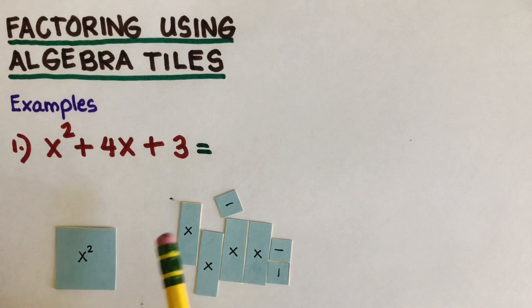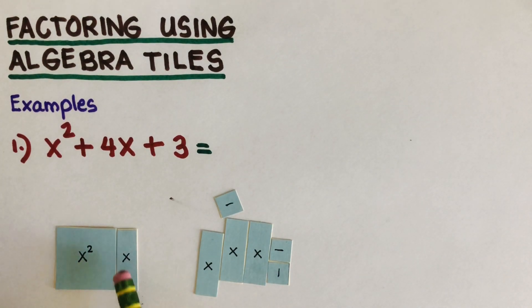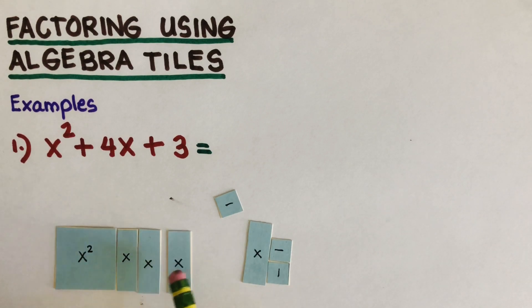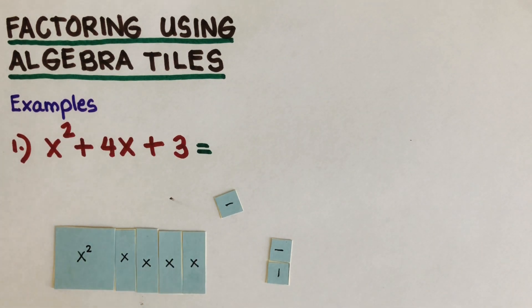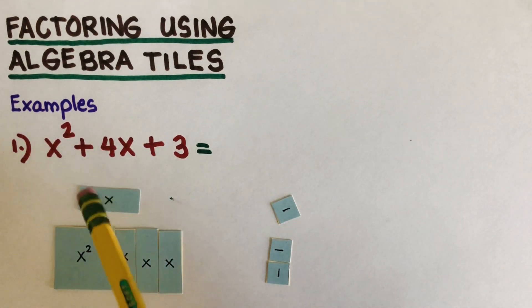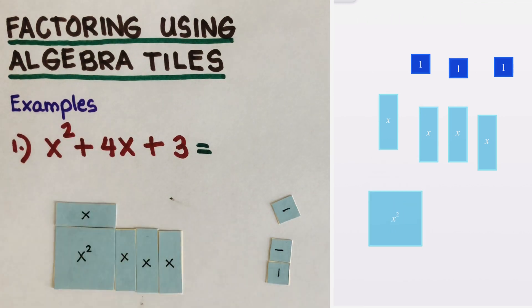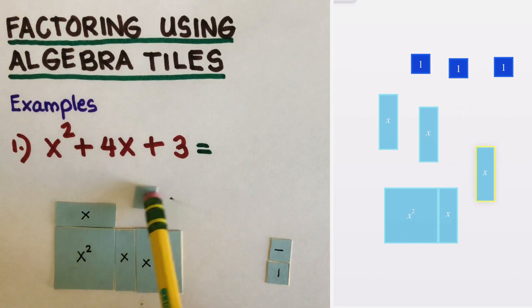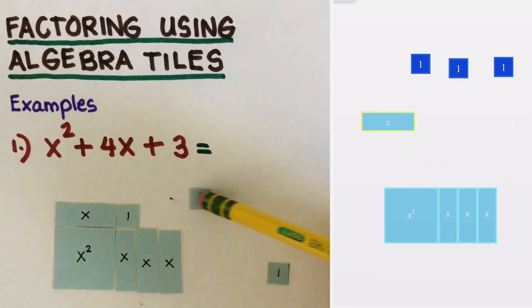Now we are going to grow the tiles to the right and up. So in here, I can put an x over here. You can give it a lot of tries to see how it works. I put the x's here and then this other x on top, and then I'll put the ones on top of each of these. As you can see, we are able to form a rectangle.